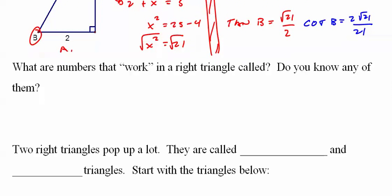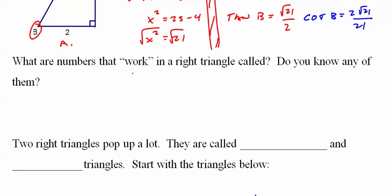So in a right triangle, in the Pythagorean theorem, numbers that work without radicals, like this radical here, numbers that don't give you a radical are called triples.